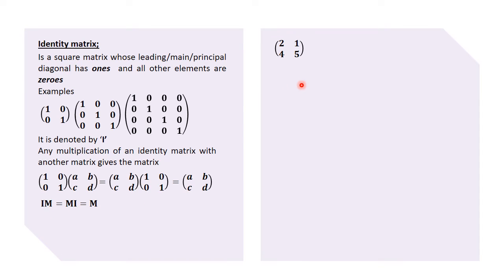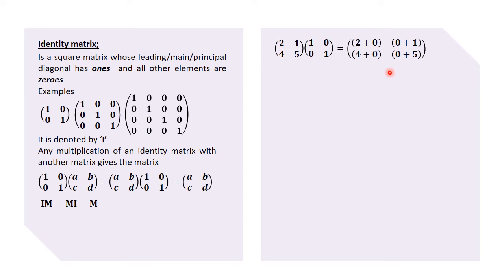Moving on to some examples — we have the matrix [2, 1; 4, 5]. If this is multiplied by the identity matrix [1, 0; 0, 1], working through it: 2 times 1 gives us 2, and 1 times 0 gives us 0; 4 times 1 gives us 4, and 5 times 0 gives us 0.